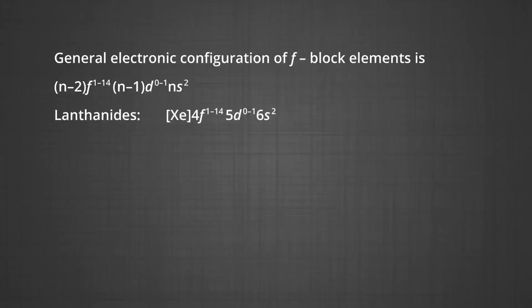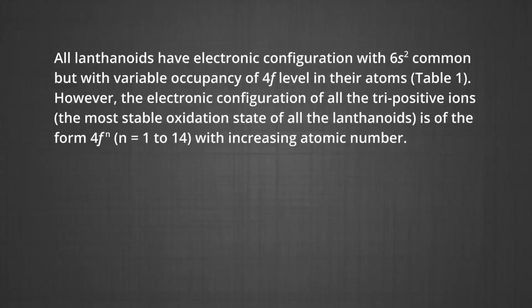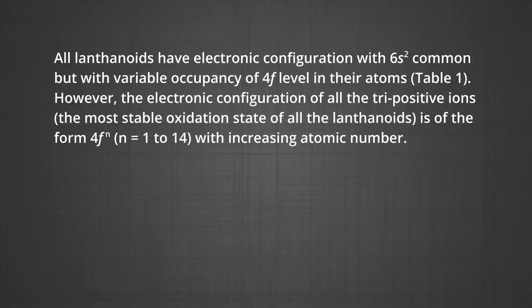The lanthanides, with the inner core of xenon, have the configuration [Xe] 4f¹⁻¹⁴, 5d⁰⁻¹, 6s². All the lanthanides have 6s² in common, but with variable occupancy of the 4f level in their atoms. The electronic configuration of all the tri-positive ions — the most stable oxidation state of all the lanthanides — is of the form 4fⁿ, where n equals 1 to 14, with increasing atomic number.